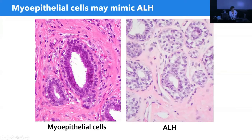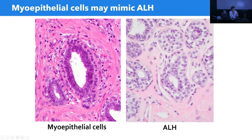Another possible mimic, more of ALH, is the presence of conspicuous myoepithelial cells that sometimes have more cytoplasm, are more round and prominent, even with clear cytoplasm and suggestion of intracytoplasmic vacuoles. But the distribution is usually regular — these are usually cases of adenosis. In ALH, the distribution of atypical cells is more irregular. Immunohistochemical stains for P63, for example, will help in the differential diagnosis.